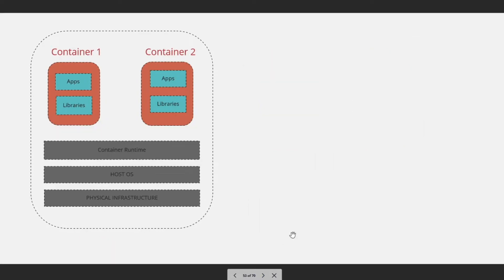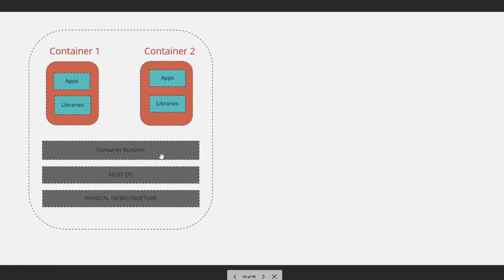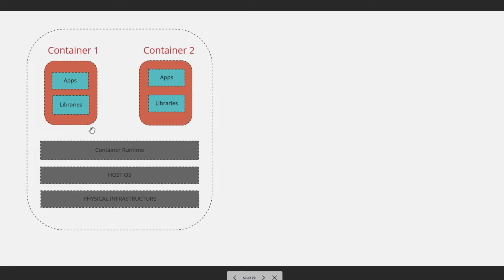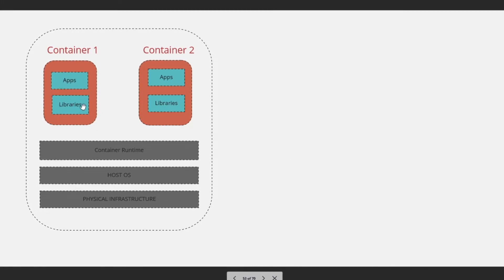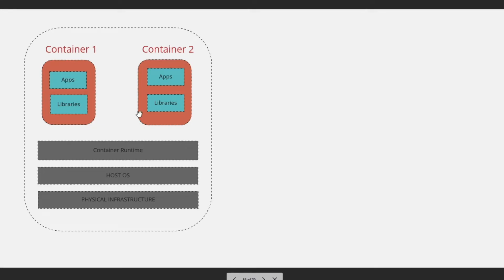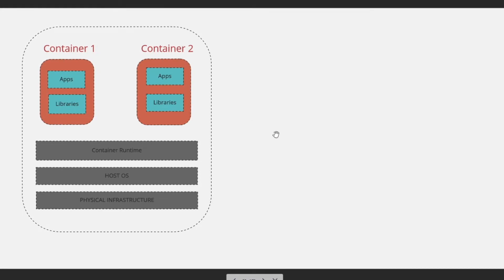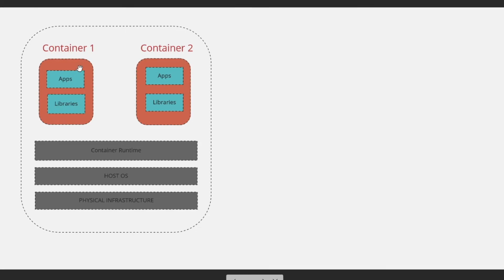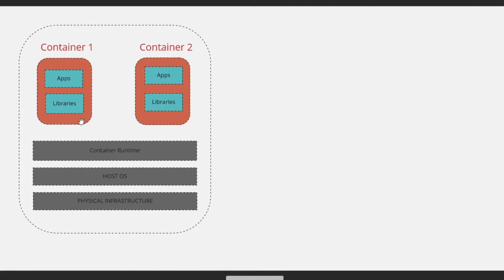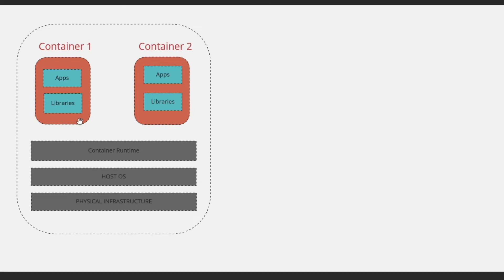Containers use OS-level isolation, meaning all containers run on top of the operating system and have their own container runtime that facilitates communication between the container and the underlying infrastructure. Containers only have apps and libraries packaged inside — they do not include a full OS, which is why they are lightweight and much smaller in size compared to virtual machines. Any changes inside a container, such as deleting a file, should not impact the host operating system — that's the meaning of isolation.